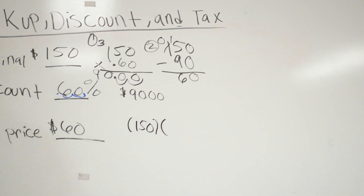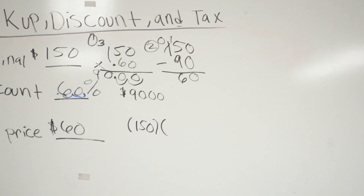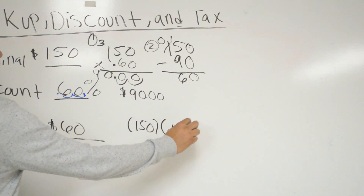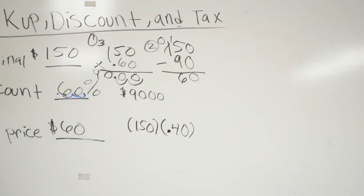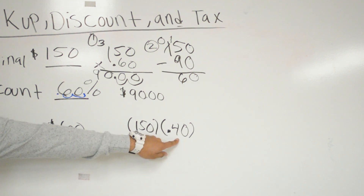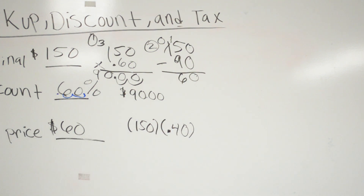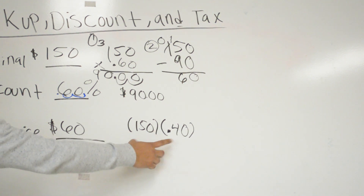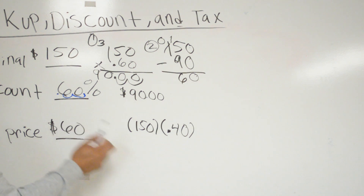The second method: go back to the $150 original price. We're going to focus on what we're going to pay. We're not paying 100% and not paying 60% — we're paying 40%, because 100% minus 60% equals 40%. Turn 40% into a decimal: 0.40. Then 150 times 0.40 gives us the same answer of $60.